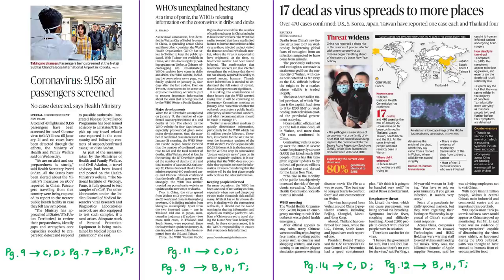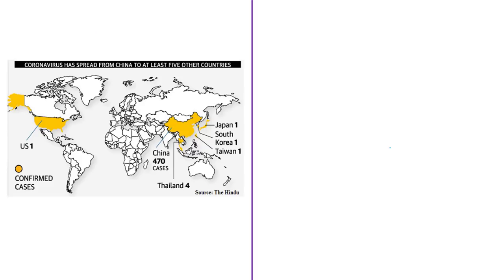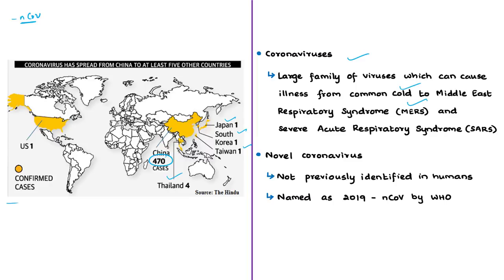These news articles are about the novel coronavirus, which originated in the Wuhan province of China. We will discuss the novel coronavirus, its symptoms, treatment, and other related details. The syllabus relevant for this analysis is highlighted for reference. For the last few days, news of the novel coronavirus outbreak in Wuhan has been reported, and the virus has been spreading outside China. As of now, it has been reported in more than 450 people in China, with cases confirmed in Japan, South Korea, Thailand, Taiwan, and the US, as shown in the map.